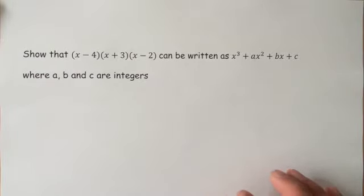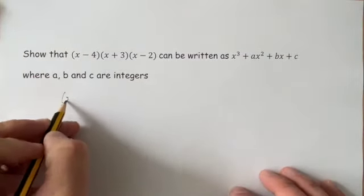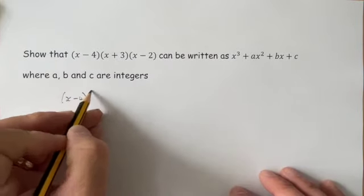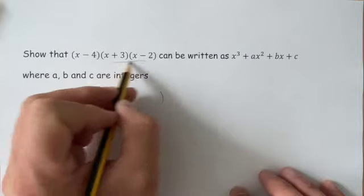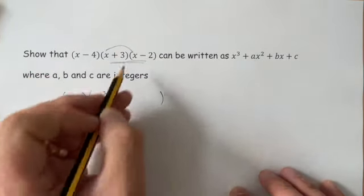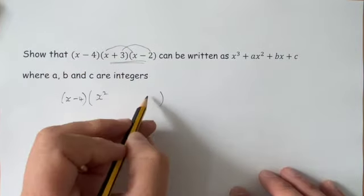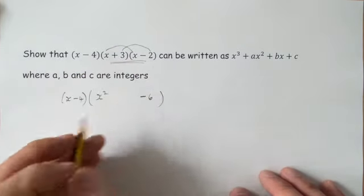Okay, to expand three brackets, I would leave that first bracket alone, don't touch that one, and I would just concentrate on expanding these two. So x times x is x squared. 2 times 3 is 6, and it's a plus times a minus, so that's a minus 6.